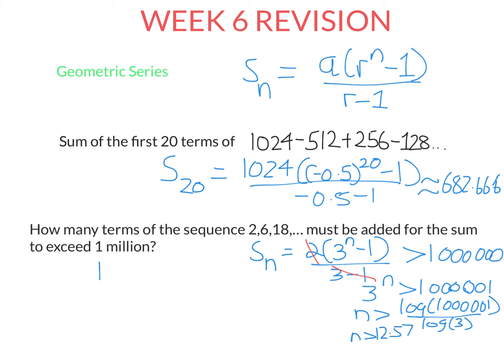So I need 13 terms. We always round decimals up. 12 terms would give me a sum that's a little less than, but 13 terms, if I sum them, would give me something over 1,000,000.